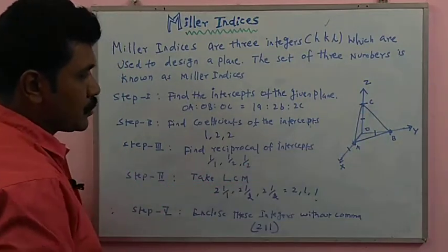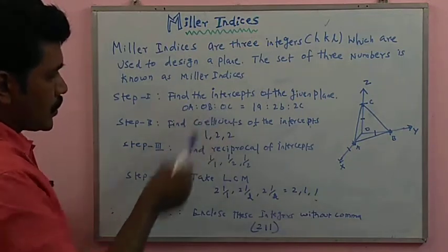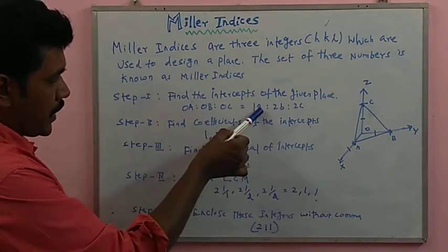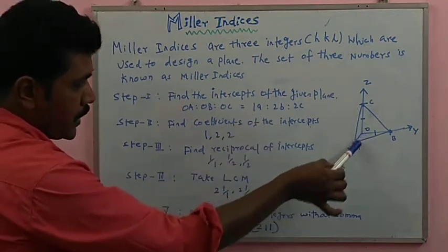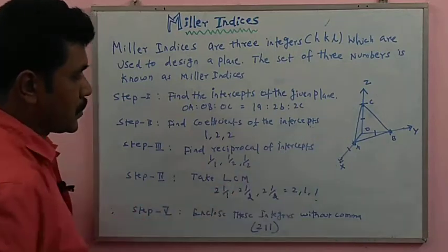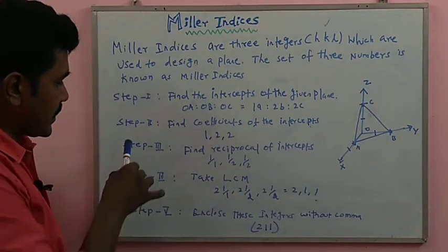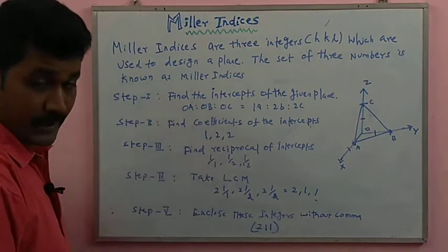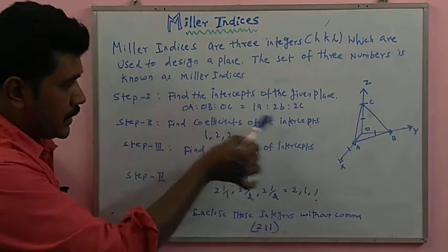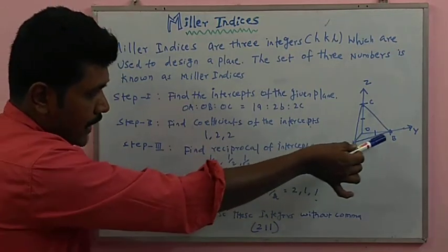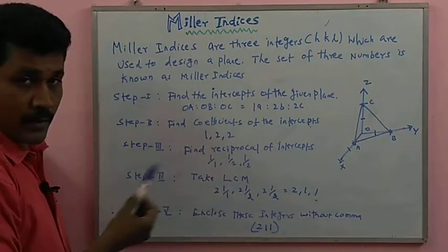The intercepts OA, OB, and OC are equal to 1a, 2b, and 2c respectively. Step two: find the coefficients. The x-axis distance is one, y-axis distance is two, and z-axis distance is two — so the coefficient values are 1, 2, 2.